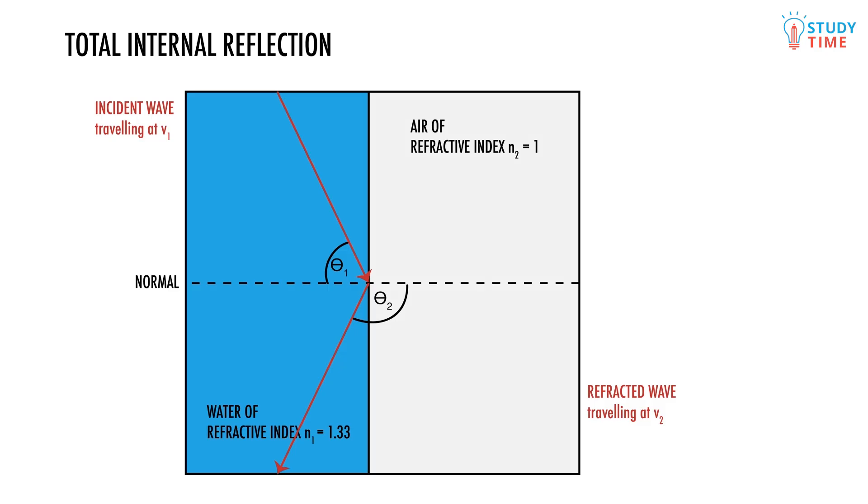So if the angle of incidence is greater than the critical angle, total internal reflection will occur. If the angle of incidence is smaller than the critical angle, refraction will occur. Remember, these only apply when a wave is traveling from a medium with a higher refractive index to a medium with a lower one.